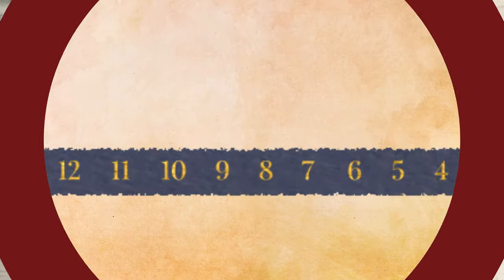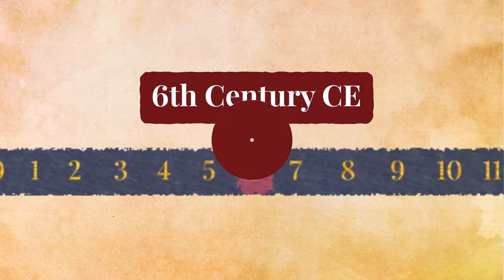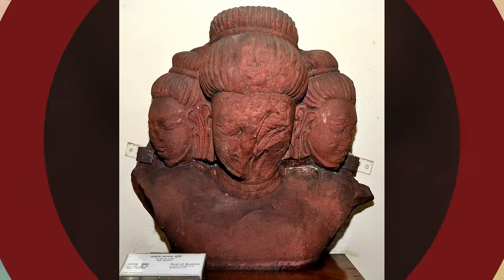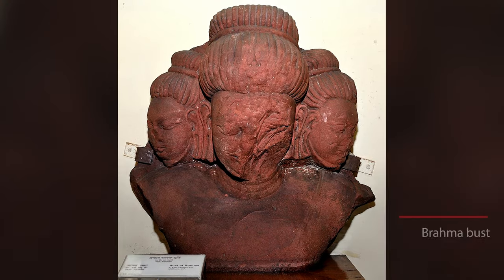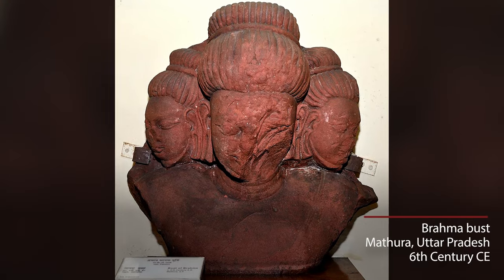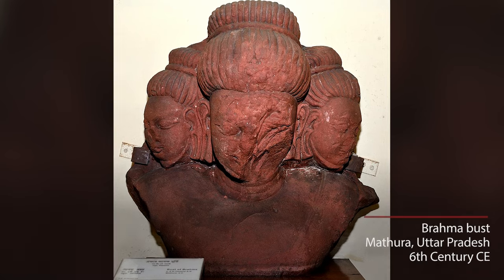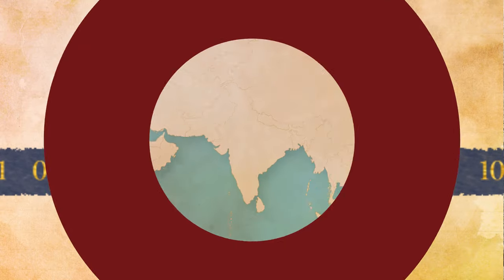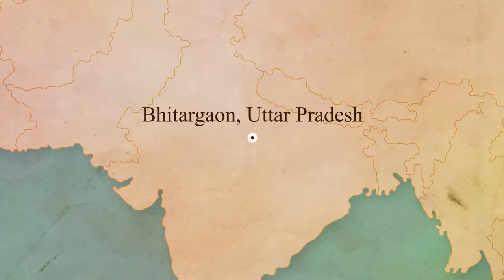The first time we see Brahma with many heads is in the Gupta period. In the Mathura region, we find artworks which depict the creator with four heads, next to Vishnu, perhaps even rising from Vishnu's navel.